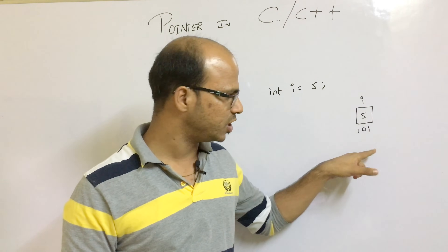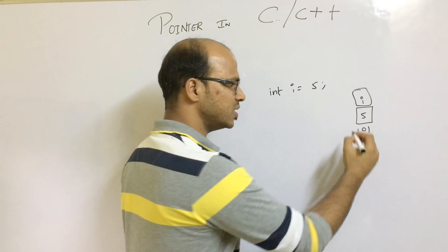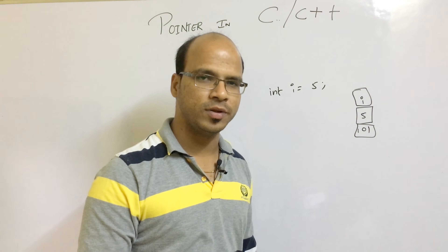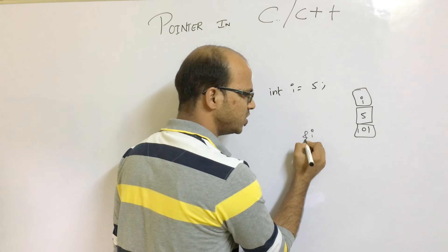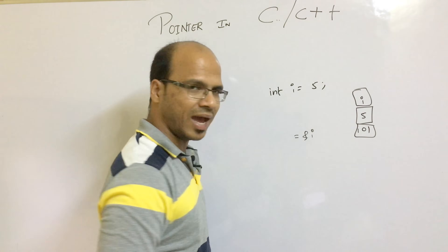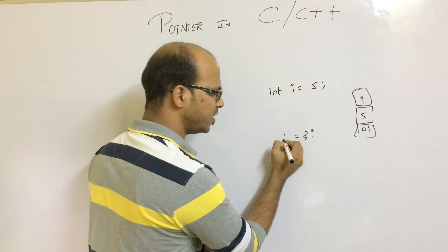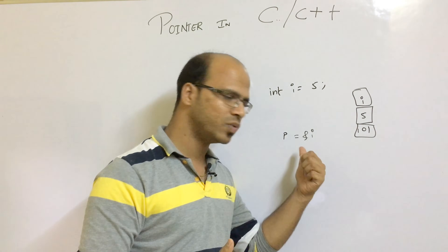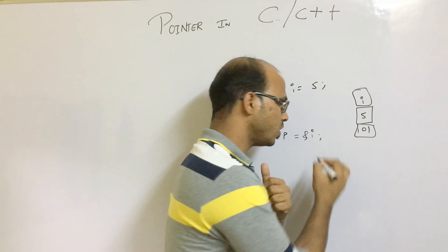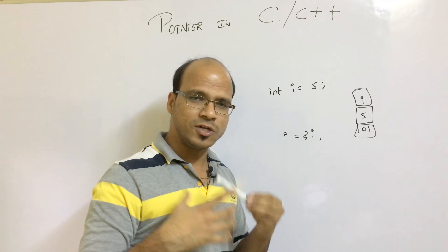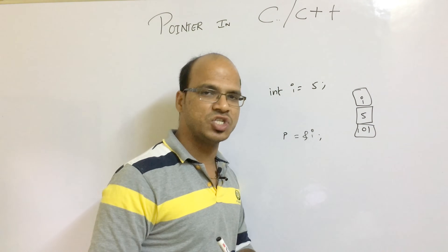A pointer will directly relate to the memory address — the address is what matters, not the name. To get the address of variable i, we can use the ampersand sign. We use ampersand to fetch the address and create a pointer variable p, setting p equal to ampersand i. The address of i is now stored inside p. Using a pointer to access memory can increase the speed of your software or make your code more efficient.